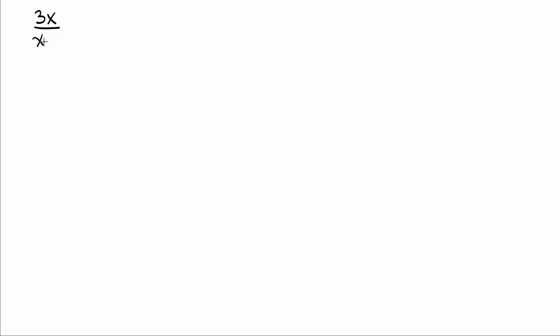This video is about solving rational equations and checking potential answers for extraneous solutions. We'll jump right into the problem. Here is a rational equation: 3x over (x minus 2) minus 6 over x equals 6 over (x minus 2).